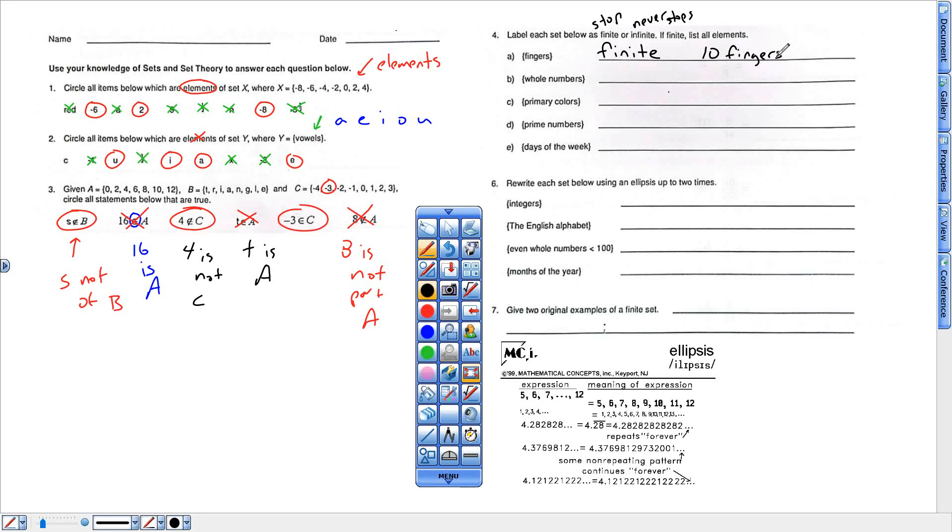Whole numbers are infinite because they can keep on going forever. Primary colors, I believe there are four of them. That is finite. And if I want to list the elements, I believe the colors are blue, green, yellow. I'm not 100% sure on the primary colors. So prime numbers are numbers that could only be divided by itself. Like one could only be divided by itself, three, five. But they keep on going. So that would be infinite.